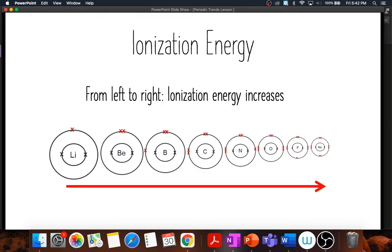But as we move from left to right on that period, if we get to neon, neon is super happy, super content with the electrons that it has in its outermost shell. So the amount of energy that you would require to remove one electron from the outermost shell of neon is going to be extremely high.